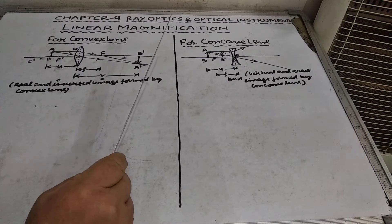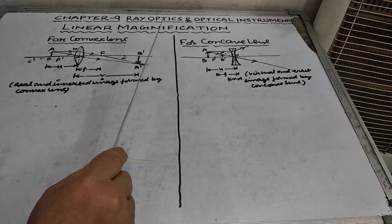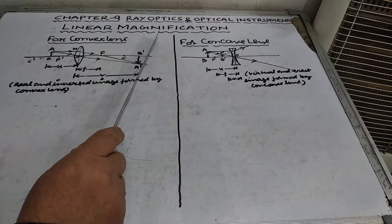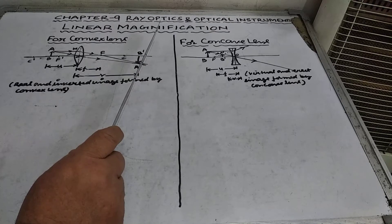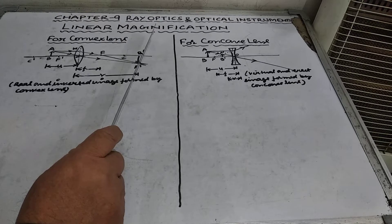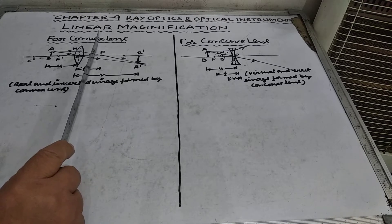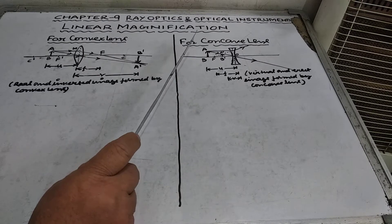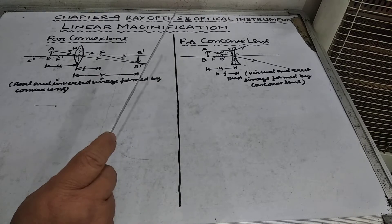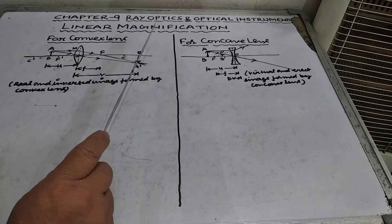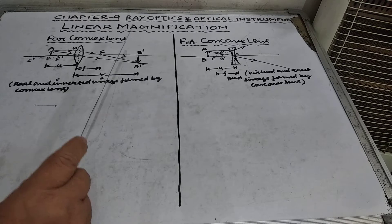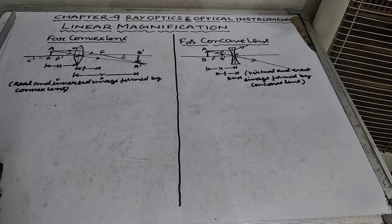Good morning students. Today I am going to discuss about the linear magnification produced by a lens. We will discuss the linear magnification produced by a convex lens as well as linear magnification produced by a concave lens. So we will discuss it separately for convex lens and the concave lens. First we will know about the linear magnification.